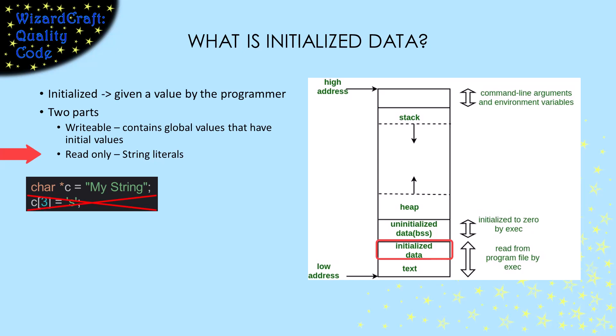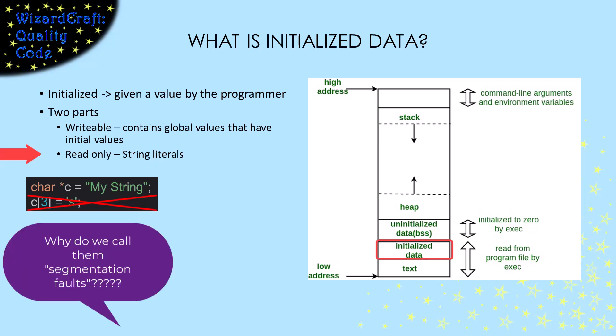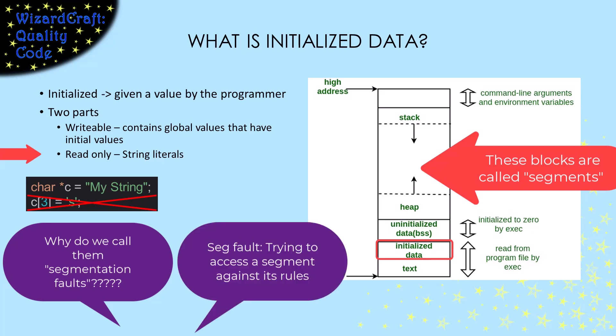Oh, great time for an aside. Do you know why segmentation faults are called that? Each of these areas of memory is called a segment. Yes, I've been using that word throughout this video. A segmentation fault means that you're trying to access a segment in a way that you weren't allowed to. So when you try to write to the read-only part of initialized data, you're breaking the rules of that segment. So you get a segmentation fault.